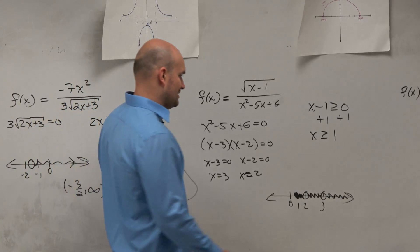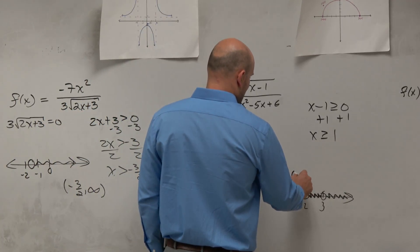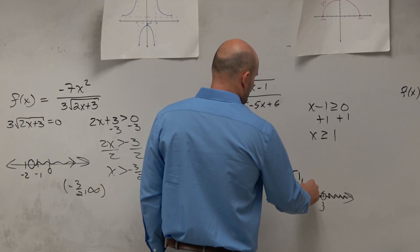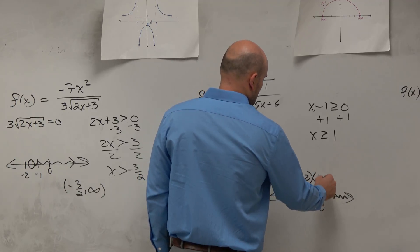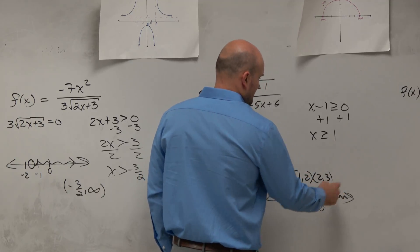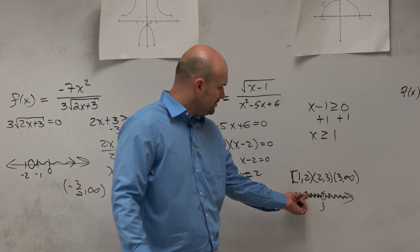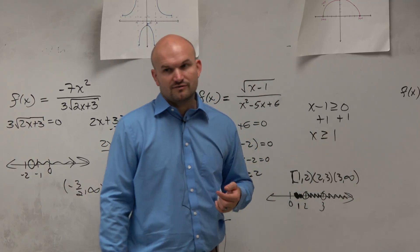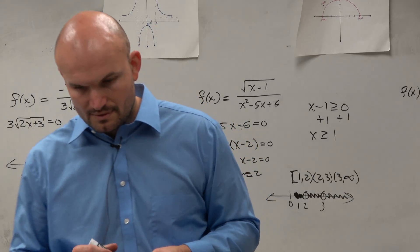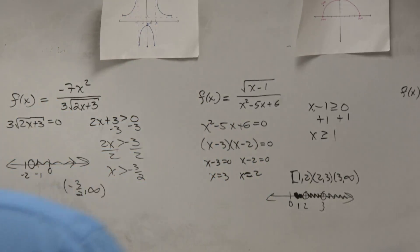So I didn't really want to do it like this, but you would have 1 to 2, 2 to 3, and then 3 to infinity. So you do the domain for each little interval. Well, that's good.